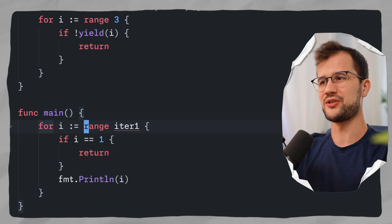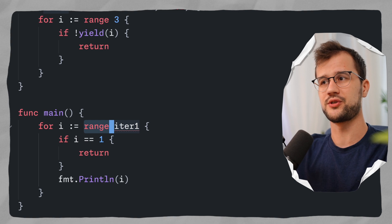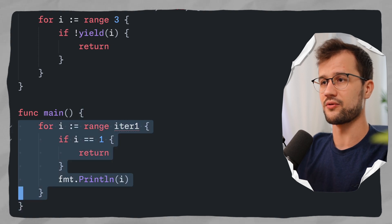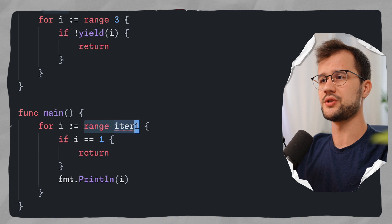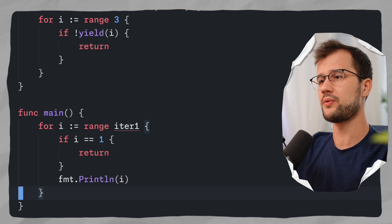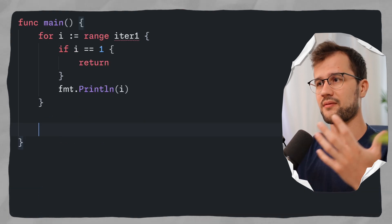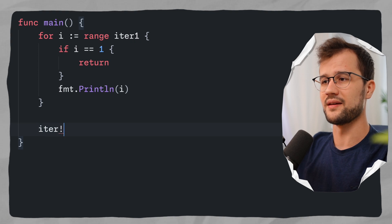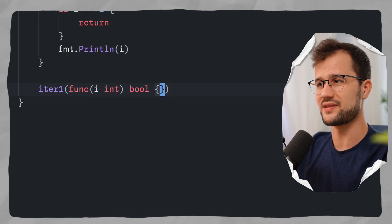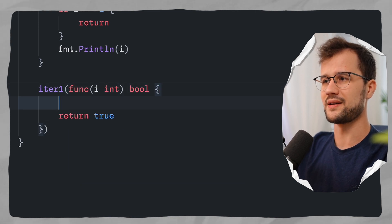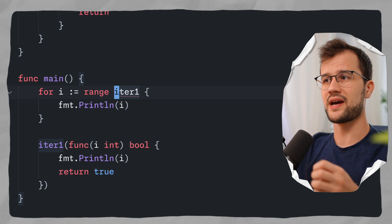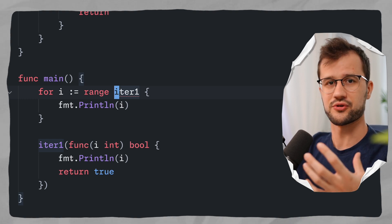The range keyword is just syntactic sugar. I'll show you what the compiler actually produces after compiling this code. In the end, range iter1 just invokes the body of our for loop. What the Go compiler produces is optimized code where we are just calling the iter1 function with another function inside, and then we return true and print i. So this is the same behavior — range is nothing more than syntactic sugar for custom iterators.